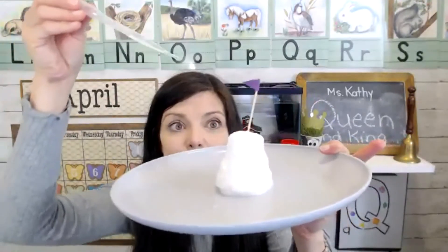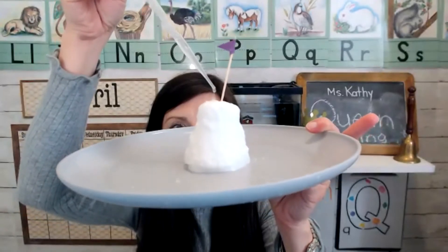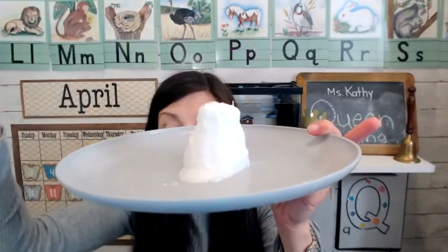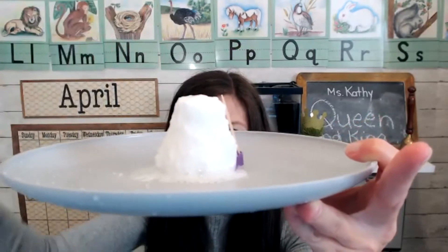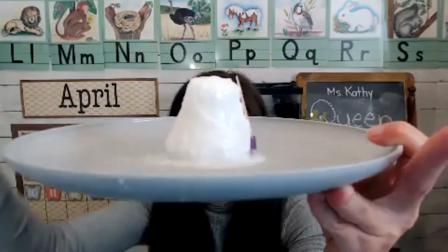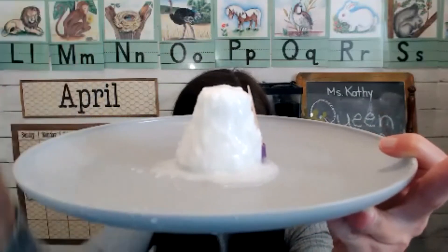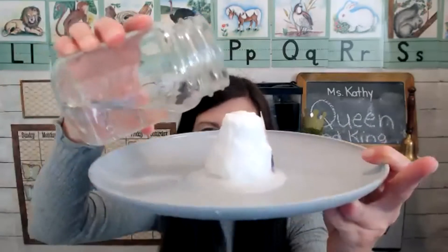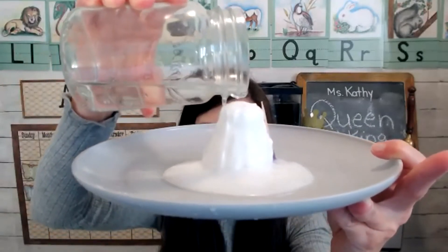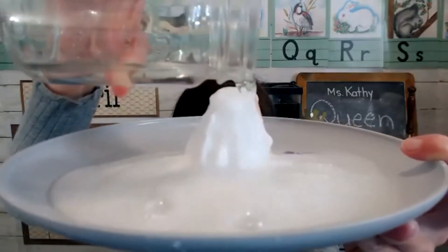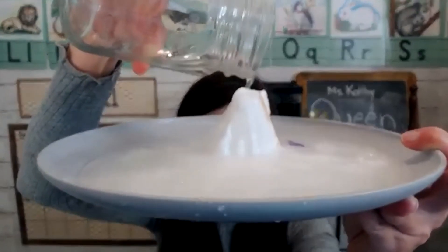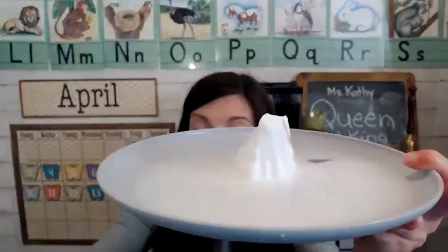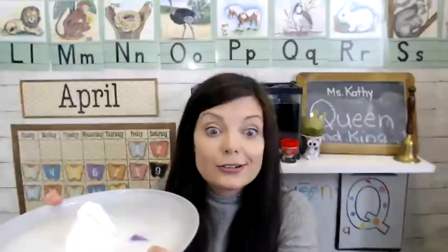Let's see how many squirts it takes before the flag comes down. One squirt and the flag was already down! What's happening is the baking soda and vinegar are reacting — this is a chemical reaction causing the castle to melt. Let's pour a bunch on and see — my castle is melting, melting, melting! It's getting smaller and smaller. But don't worry, I think Queen Elsa can make another snow castle!